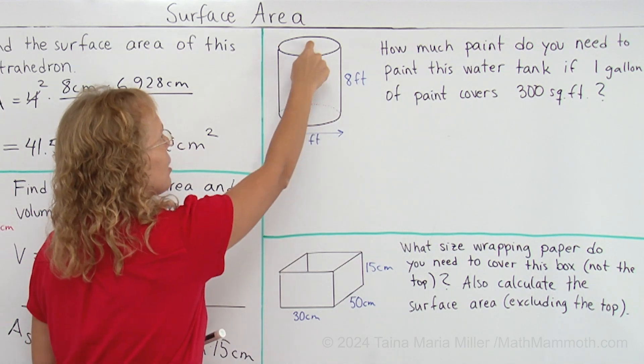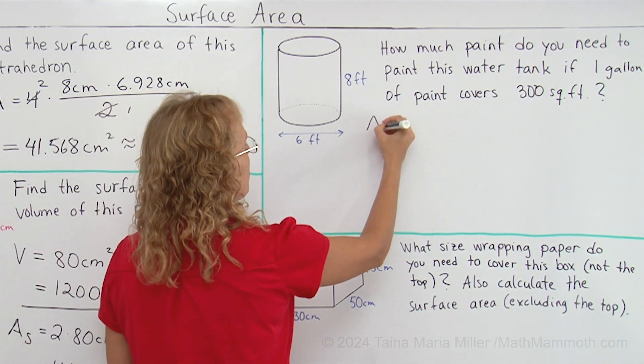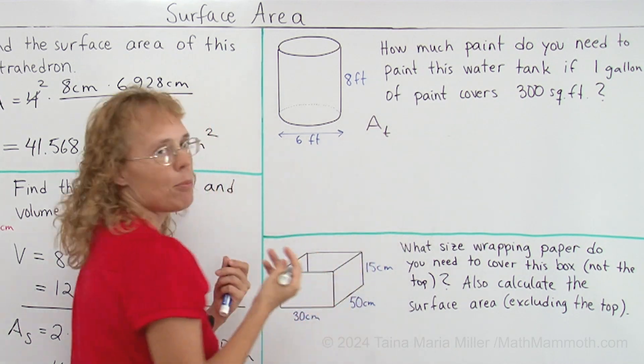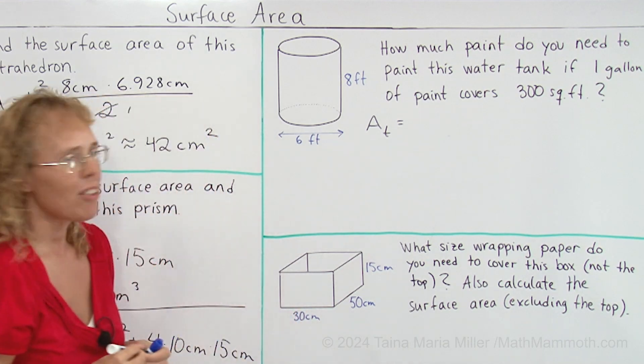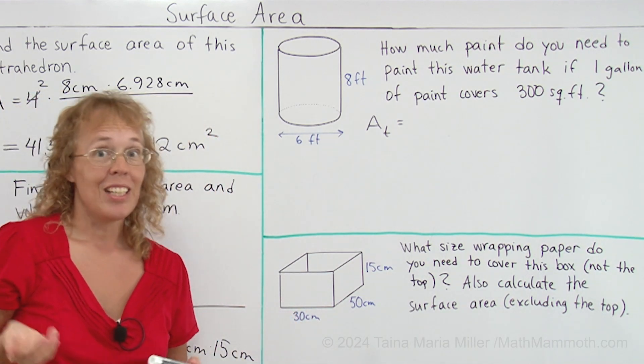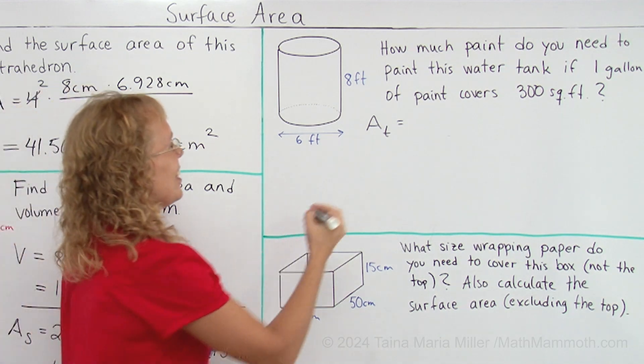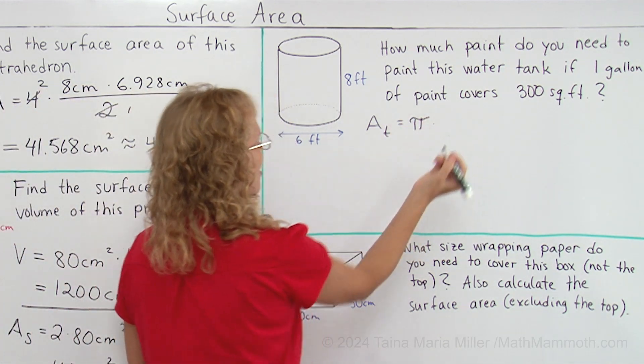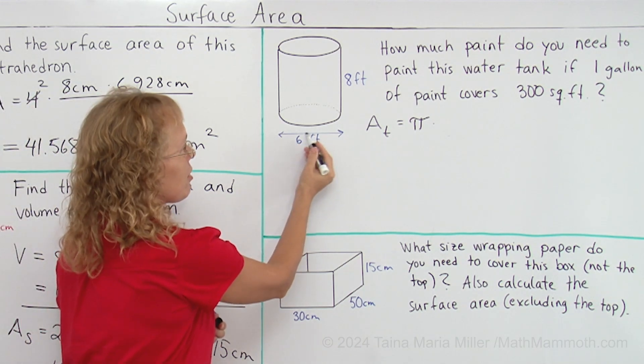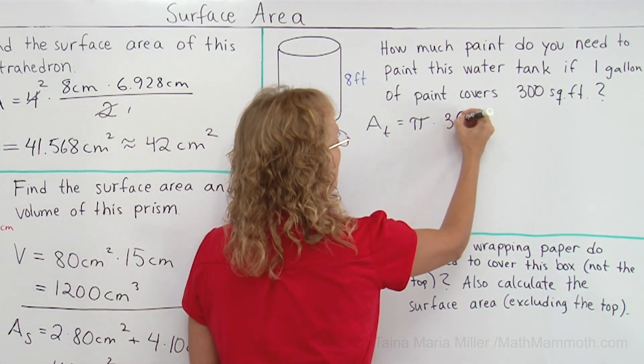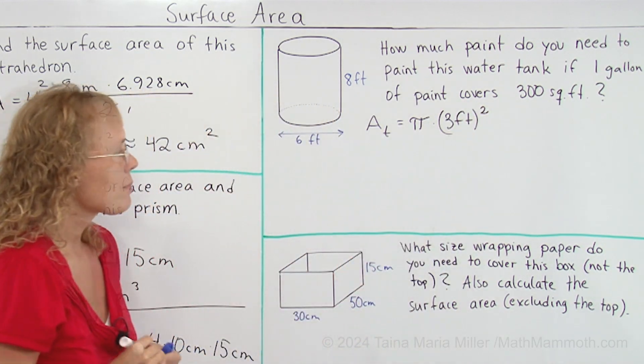So let's take the area of the top or the bottom either way that's a circle here and how do you calculate the area of a circle? Pi r squared. Pi times radius squared. The radius here is three feet and that is about 28.27 square feet.